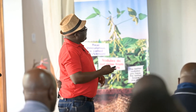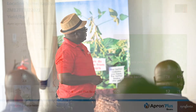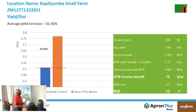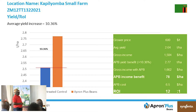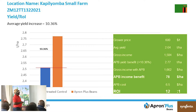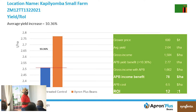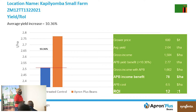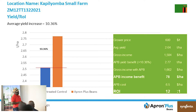So I wanted to show the return on investment that you get. These are results from Zambia. If you look at the yield on the untreated control, it's somewhere around 2.52. Then on the one treated with Apron Plus Beans, it went up to 2.76. Taking the price of soy to be $600 per ton — sometimes it goes higher or lower, but we take an average of 600.